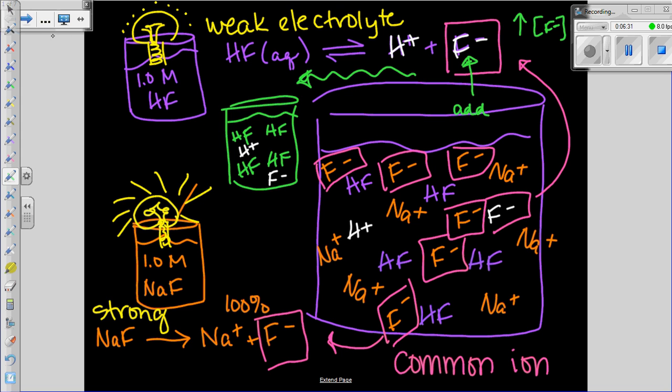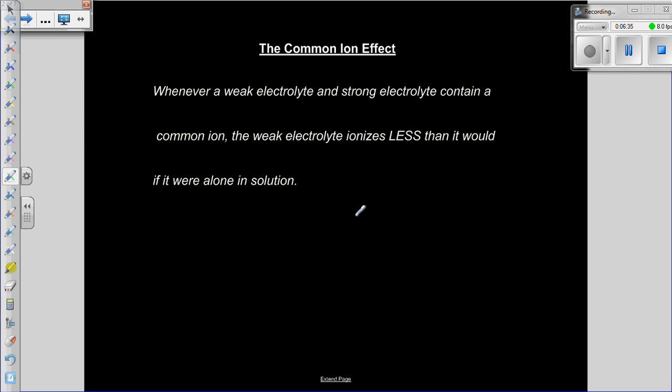So let's look at this as an official definition. So the common ion effect as defined in your textbook states that whenever a weak electrolyte, so this is going to be like a weak acid or base, and a strong electrolyte, this is going to be your salt.